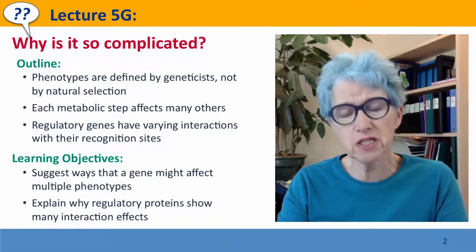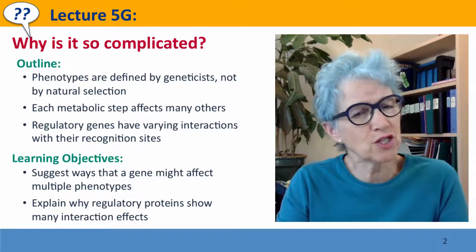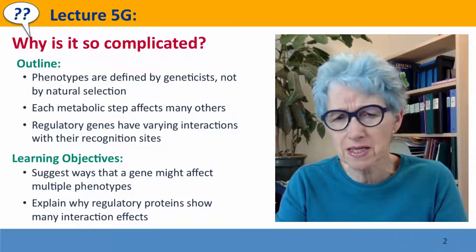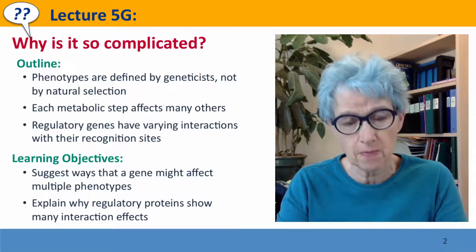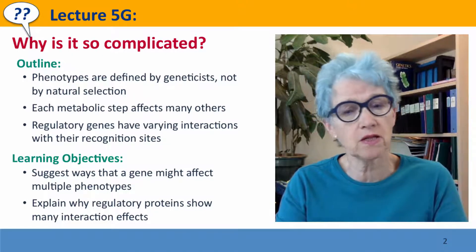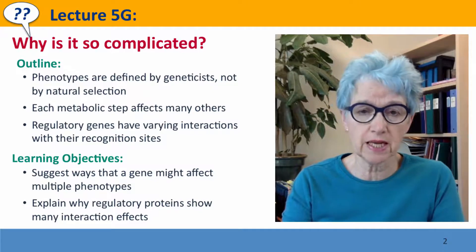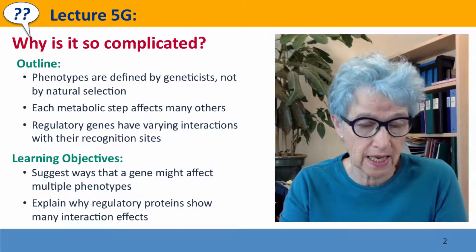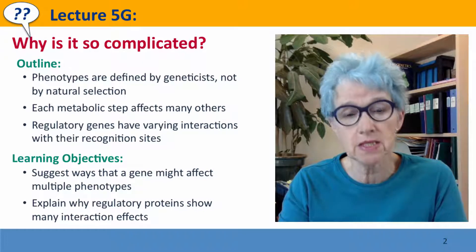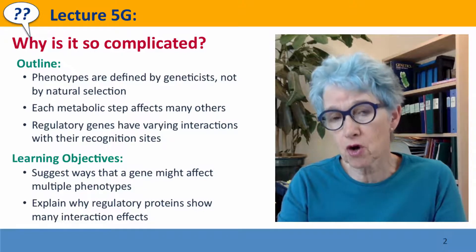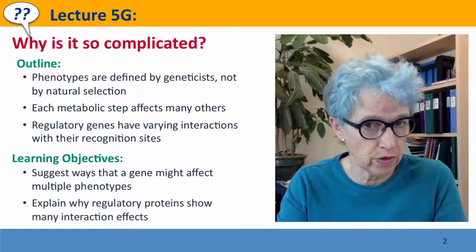Fundamentally, the problem is in our expectations — we think things should be simple because we think of phenotypes as simple things, but of course they're not. We'll think about this specifically in the context of metabolic genes, genes that code for proteins that catalyze enzymatic reactions, and then we'll think about it in the context of genes encoding regulatory proteins.